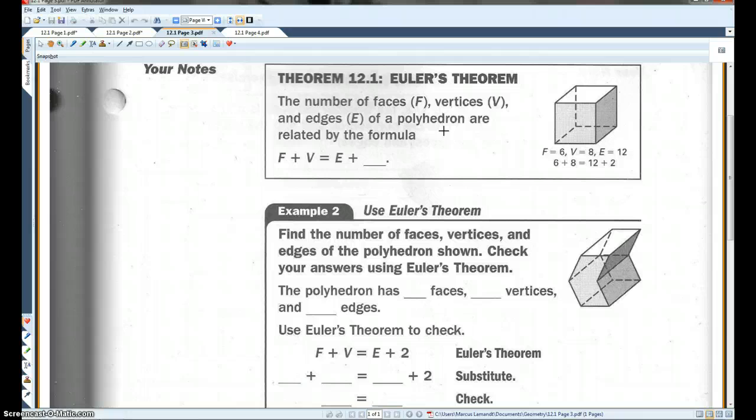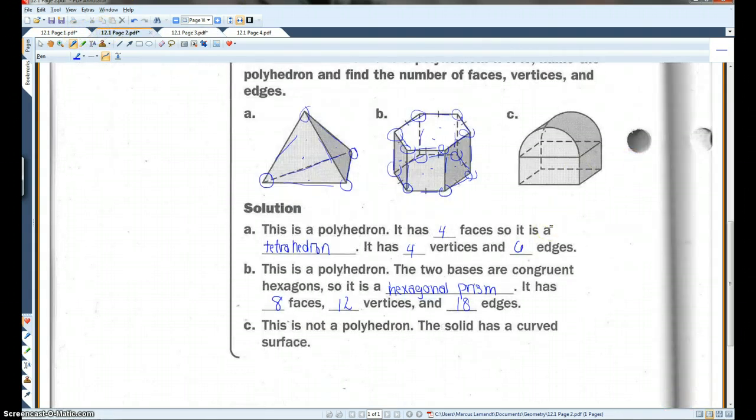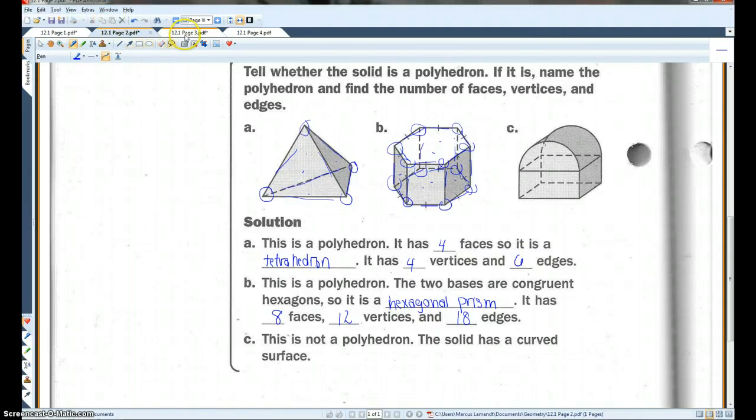The number of faces F, vertices V, and edges E of a polyhedron are related by the formula F plus V equals E plus two. And that's the case over here. It's also the case for the three examples we did on the previous page.